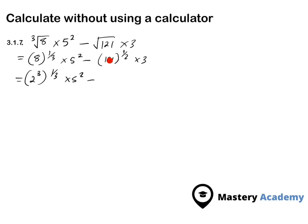Again, 121 can be written as 11 to the power of 2. So, 11 to the power of 2, 1 over 2. I choose 11 to the power of 2 because I want it to cancel with my exponent, which is 1 over 2 times 3.